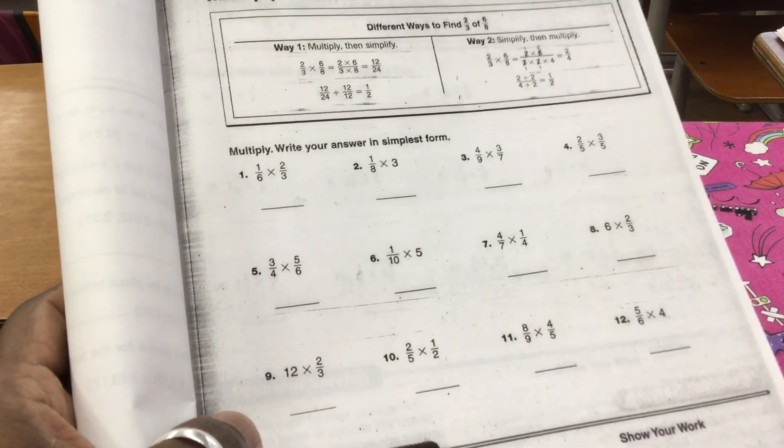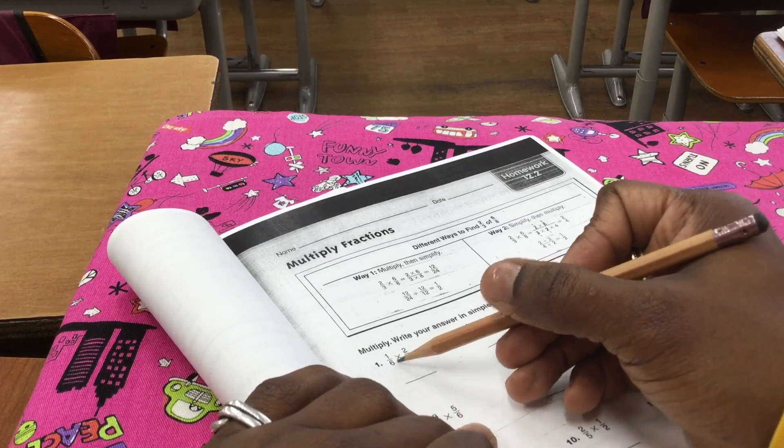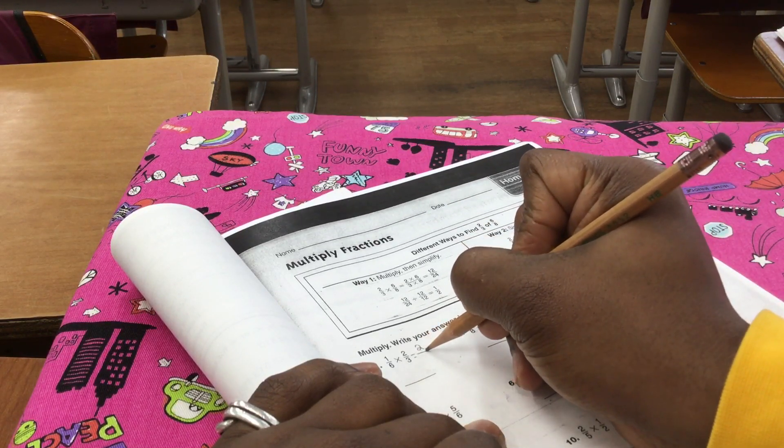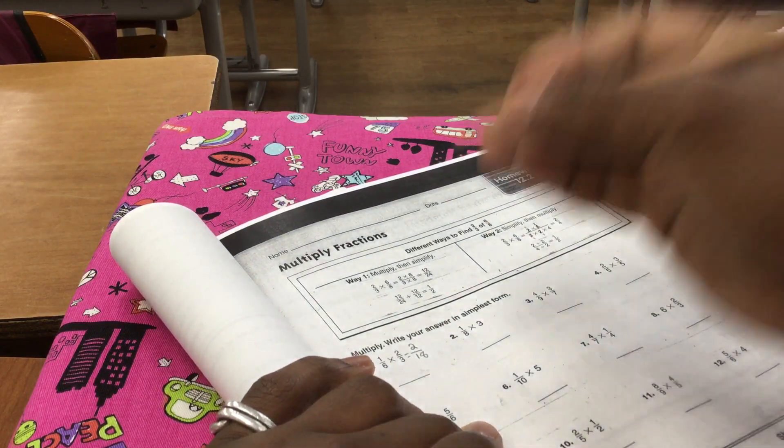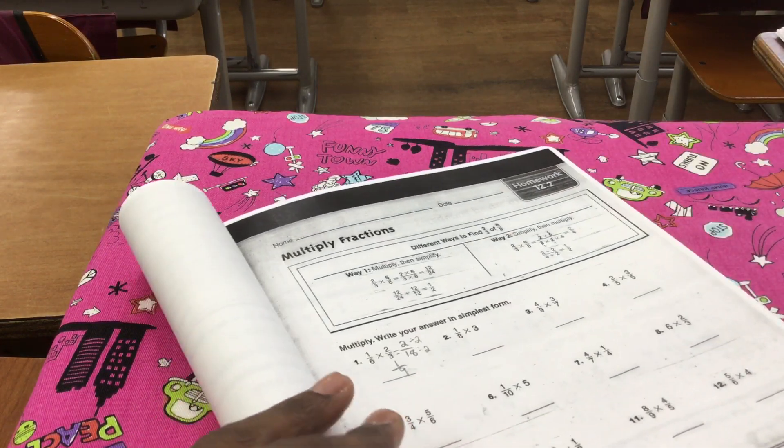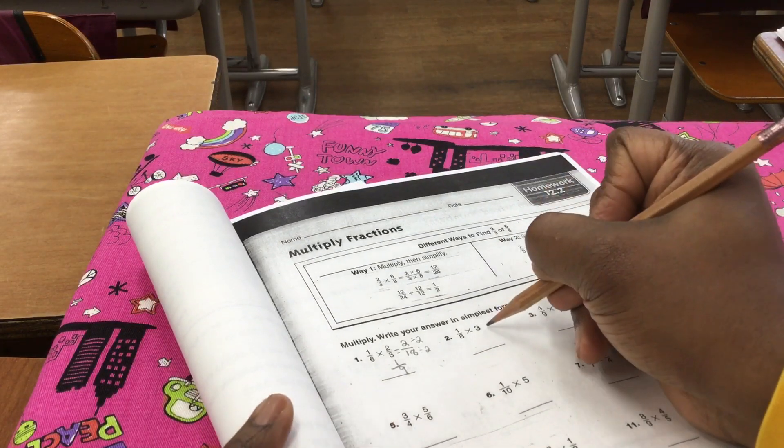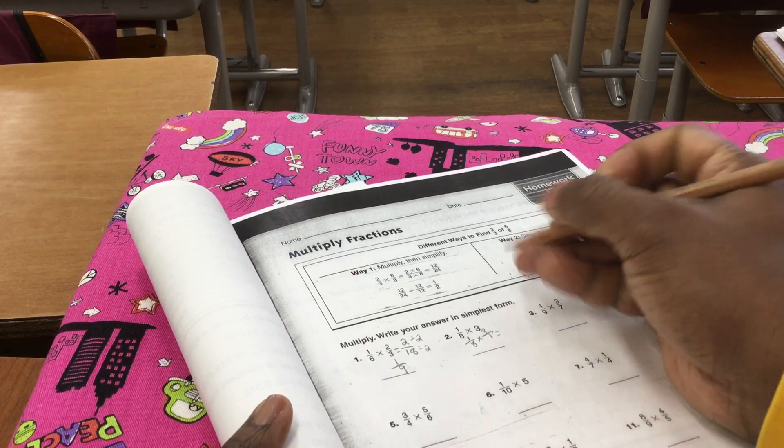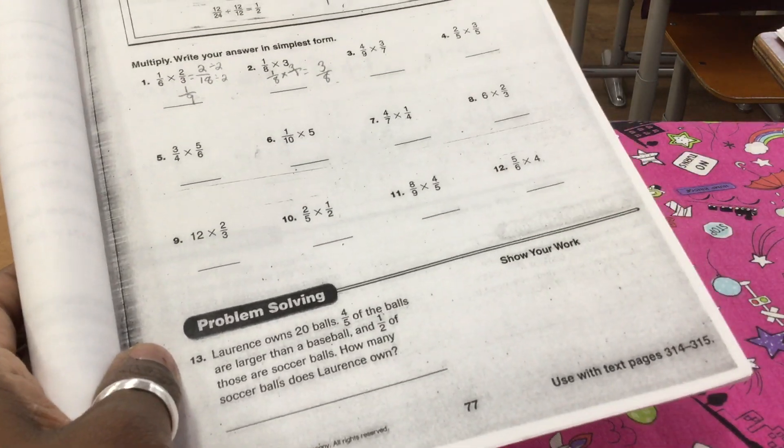Multiply. Write your answers again in simplest form. Let's look at a few examples. One-sixth times two-thirds. That's going to give me two over eighteen. I can simplify that. Divide it by two. Divide it by two. That gives me one-ninth. And remember when you have a whole number put the whole number over one. One-eighth times three over one. That's going to give me three-eighths. And I cannot make that any smaller. Show your work. That's all.